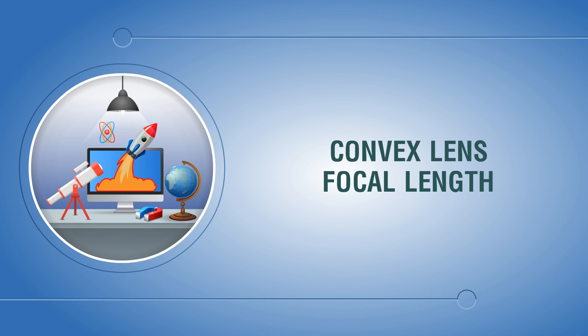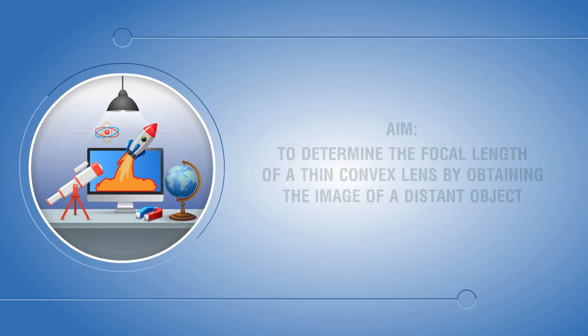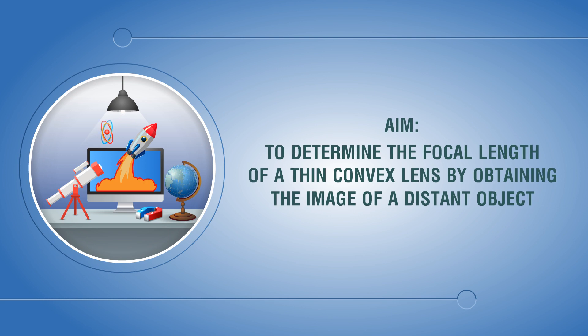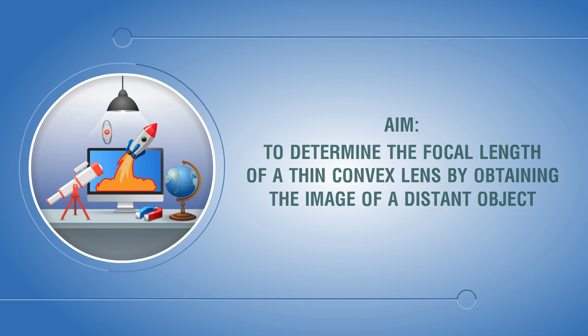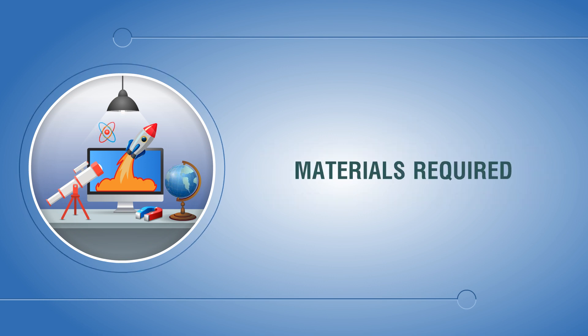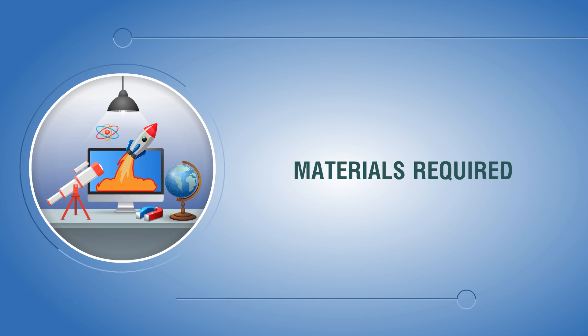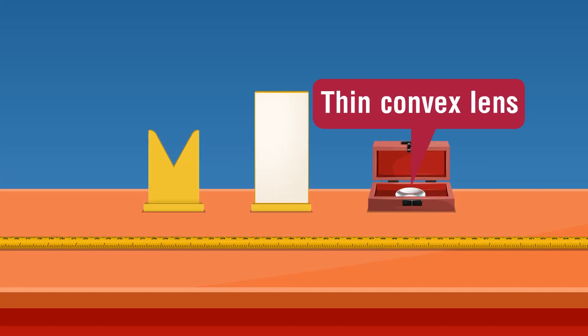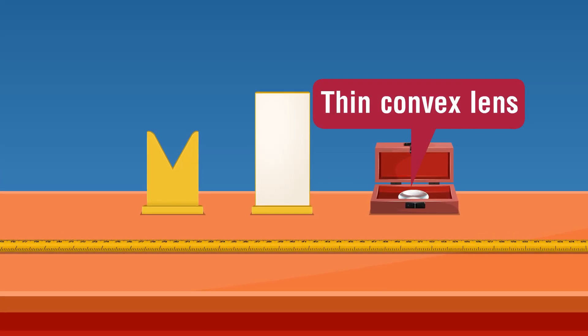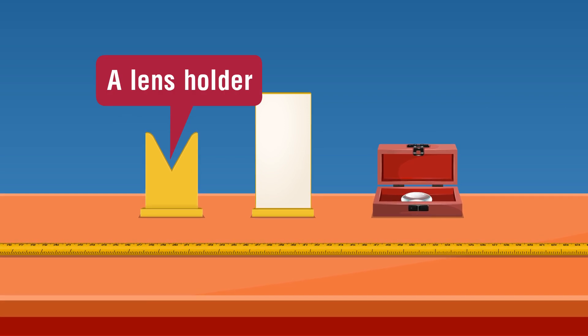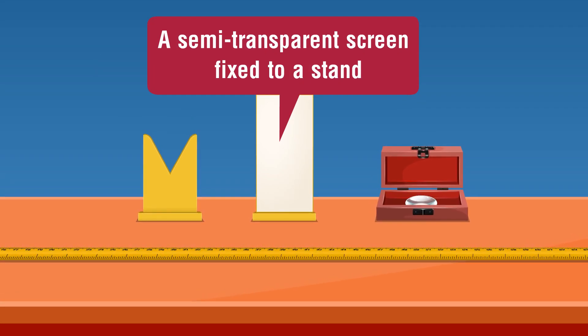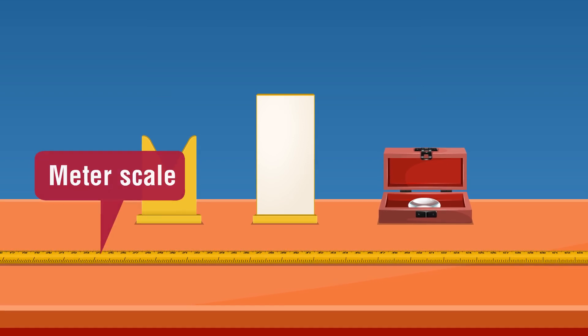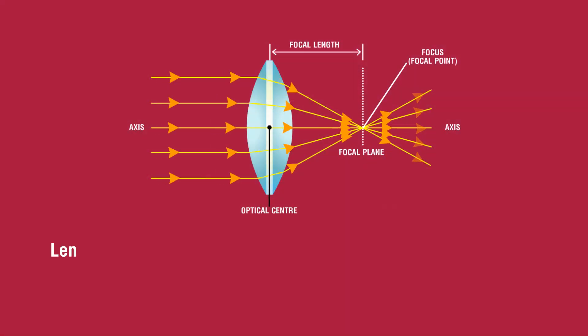Convex lens focal length. Aim: to determine the focal length of a thin convex lens by obtaining the image of a distant object. Materials required: convex lens, a lens holder, a semi-transparent screen fixed to a stand, meter scale.